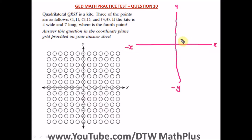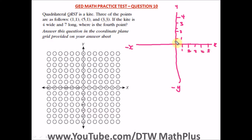Let's say this is one, two, three — and we have a five here in the x region. So let's label: one, two, three, four, five. We can stop here since there are no negative values among the three given points, so we're just in the positive region.